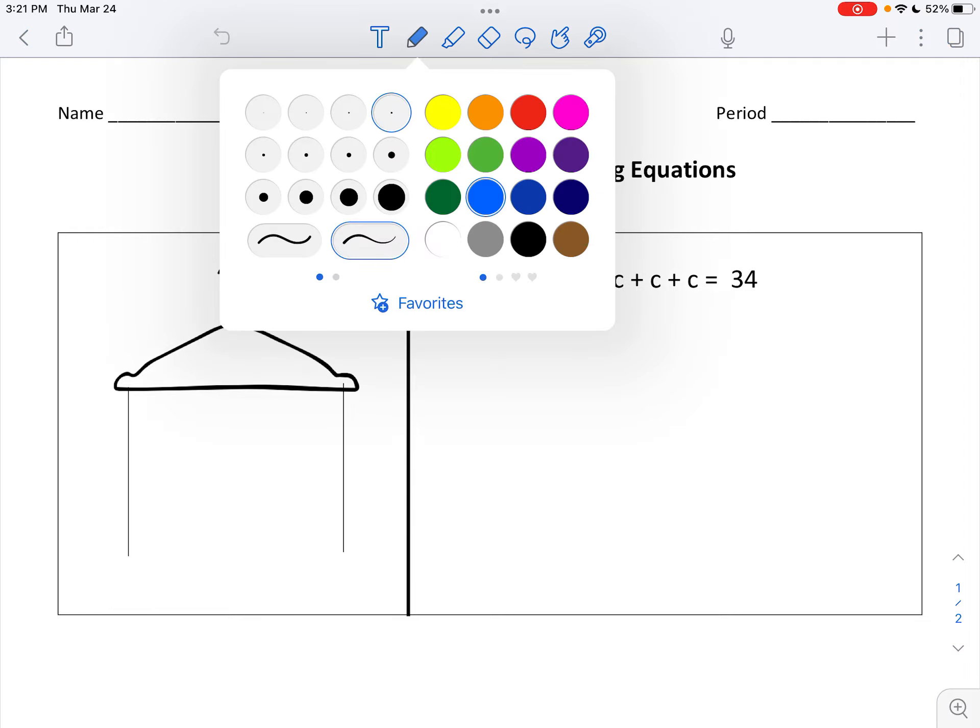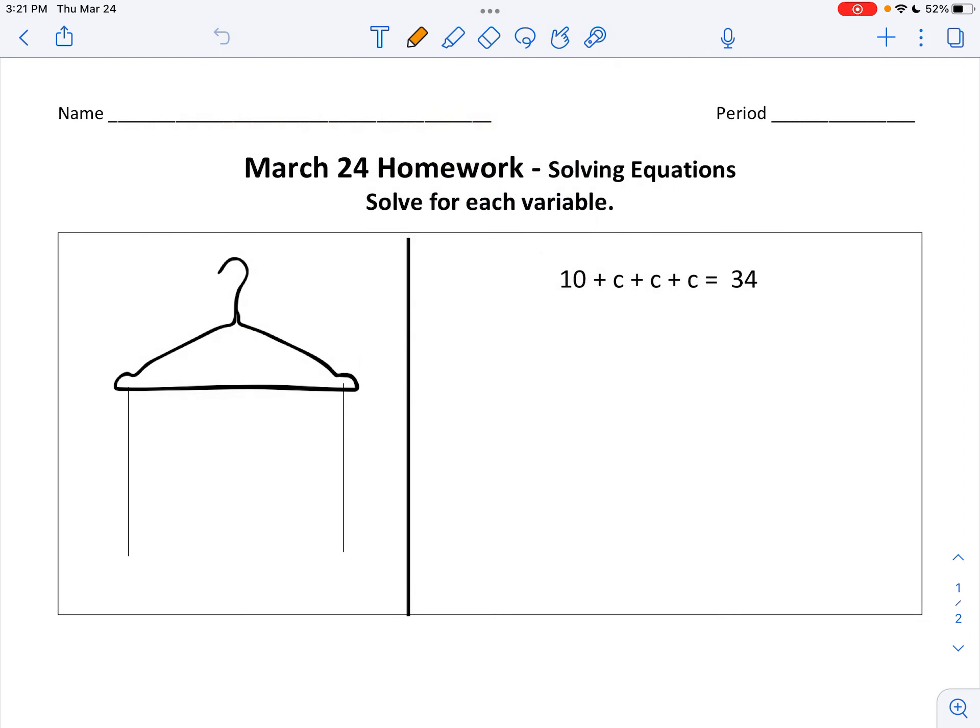If you look back at your notes, which you took a screenshot of today in class, the very first thing we did was we made a straight line through the equals, and that was the same as a straight line through the hanger.